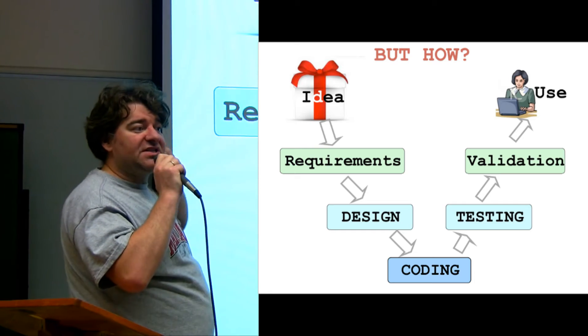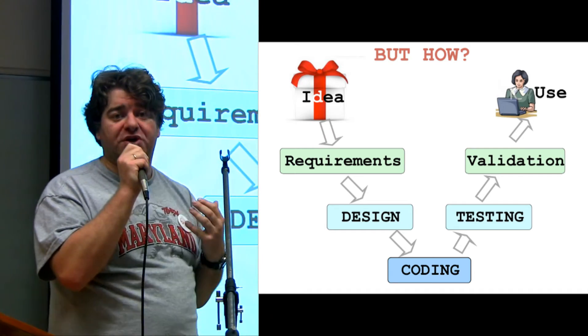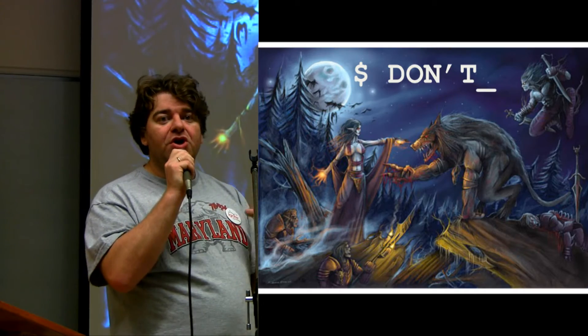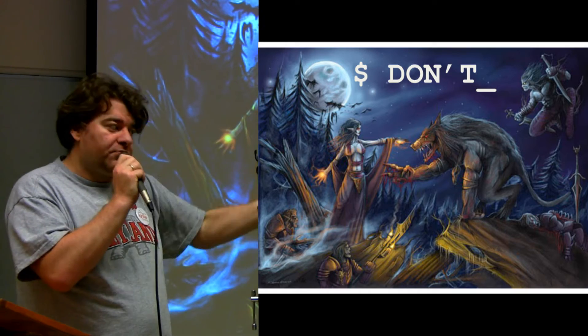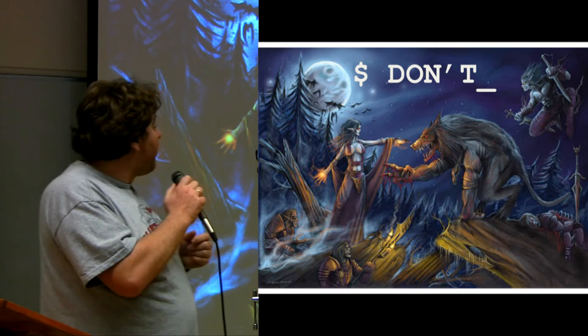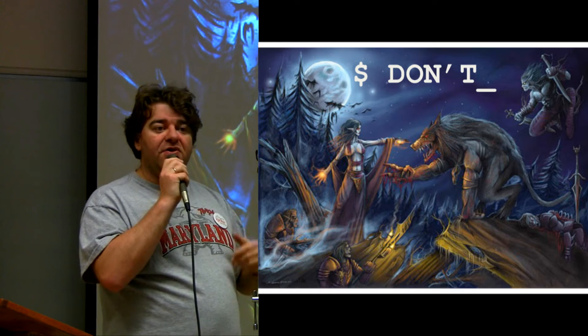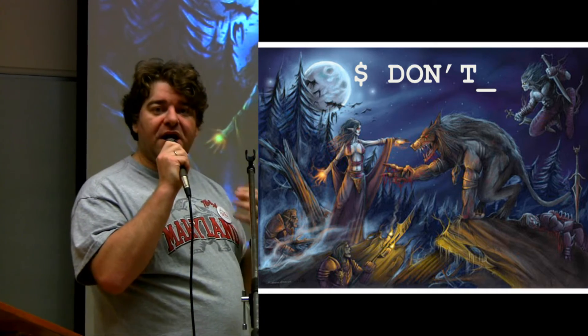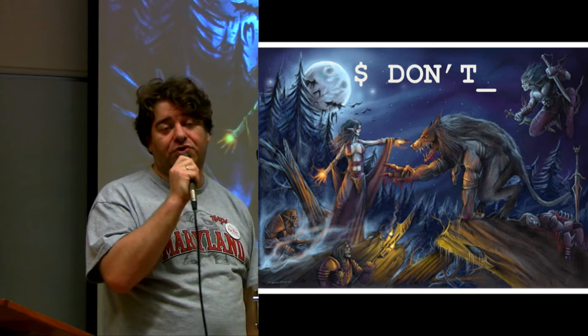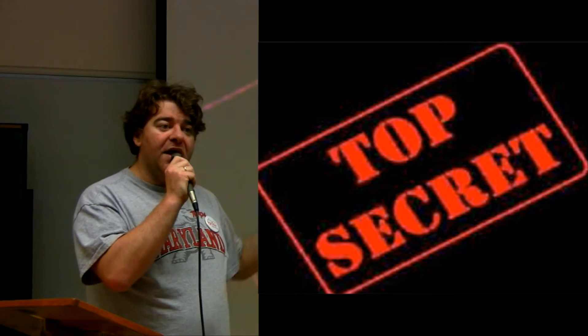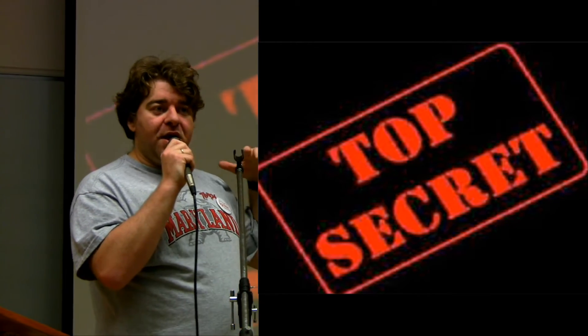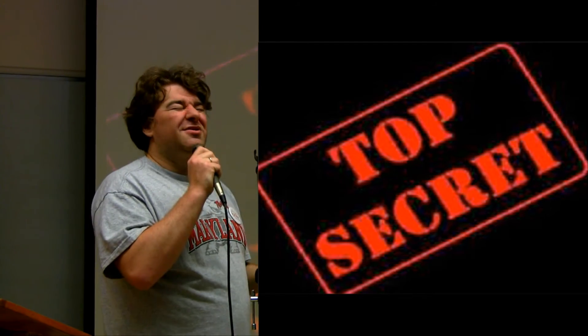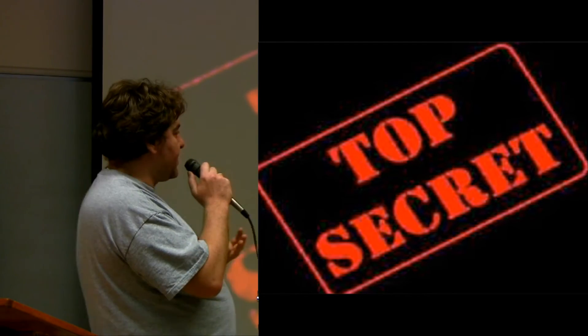You need to understand how a software engineering process works. This is not something we teach non-computer scientists or non-traditional software engineers. But this is something that you need to learn. The other thing you need to learn is not to make a mortal enemy out of the person who actually codes your software. By giving them bad requirements, by not working right with them.